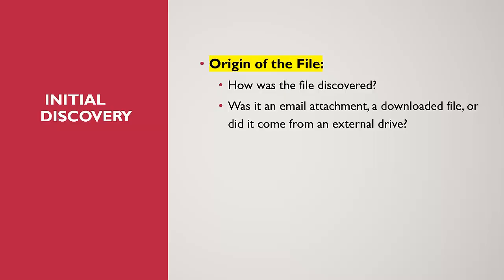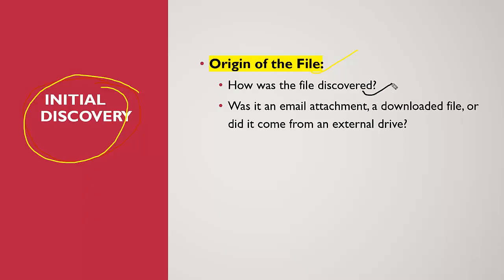Whenever we get information that a particular system got infected with ransomware, or files have been encrypted, or a system is under ransomware attack, the first thing we always need to do is the initial discovery. In the initial discovery, when you find some files, you need to first identify the origin of the file — how was the file discovered? For example, was this file delivered by email, or did someone use an external pen drive?